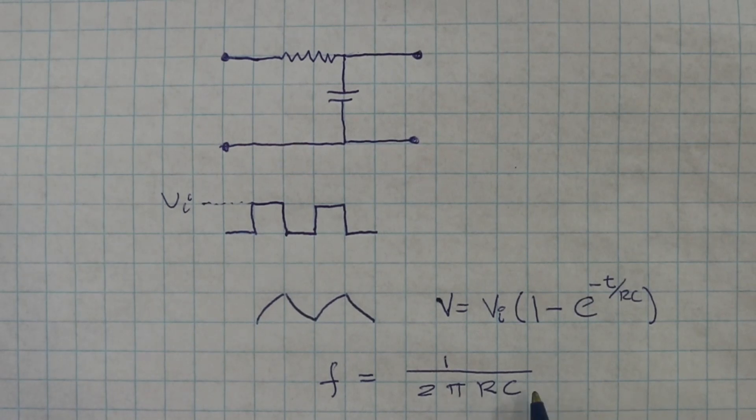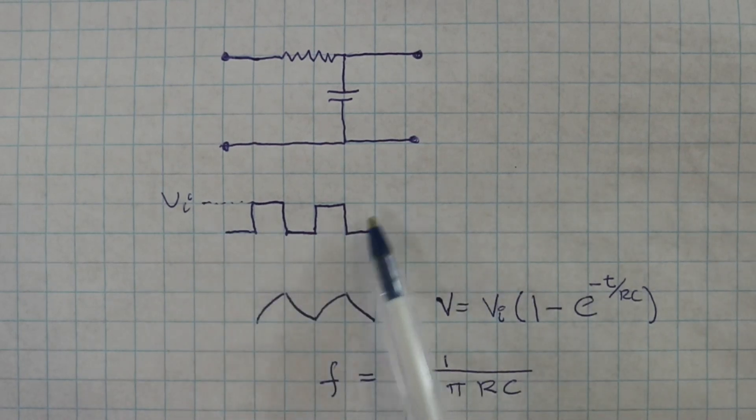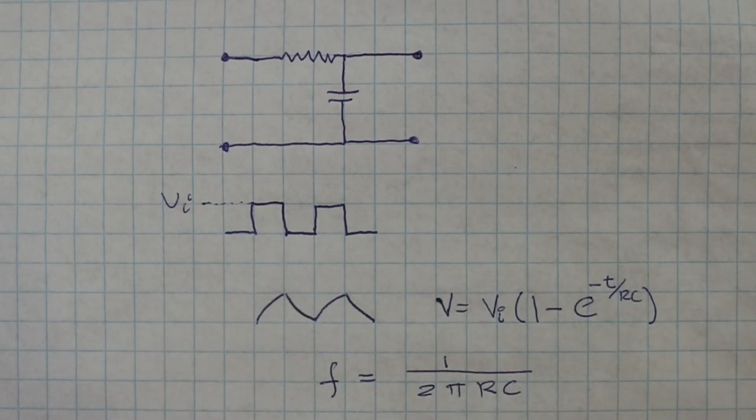So our values of R and C will be chosen so that this value of frequency is close to the frequency of the square wave at the input.